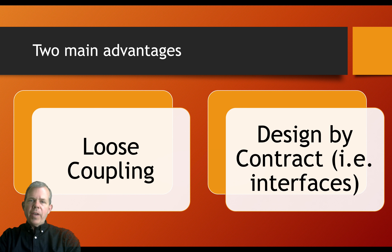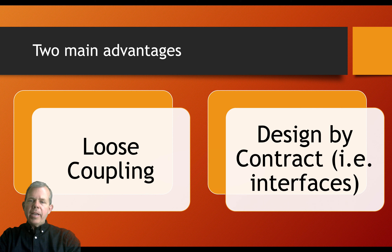There are two main advantages to programming this way. First is loose coupling — loose coupling allows one class to exist without the other being instantiated. Designing by contract using interfaces is how we achieve this. A lot of people want to do this for testing purposes, so that you can test a piece of code without having to depend on another piece of code.